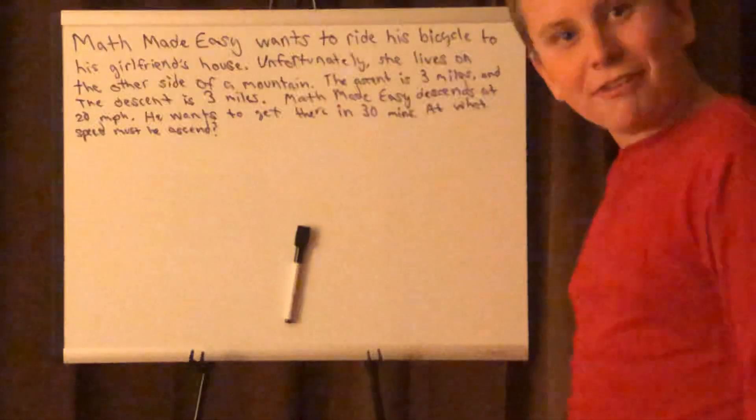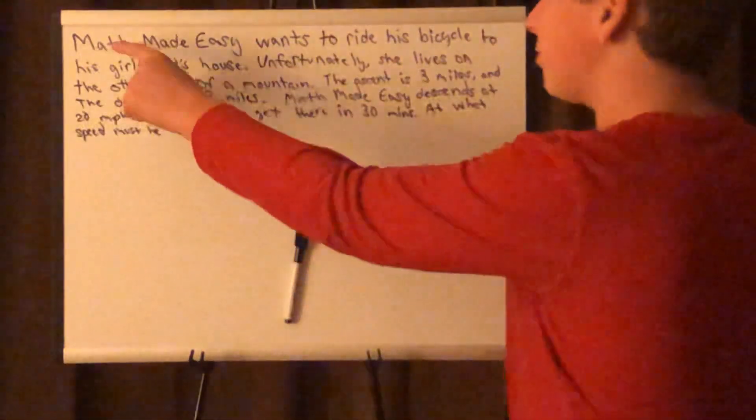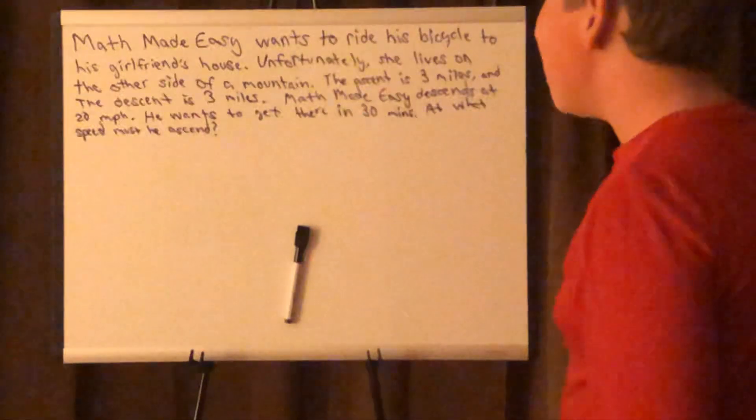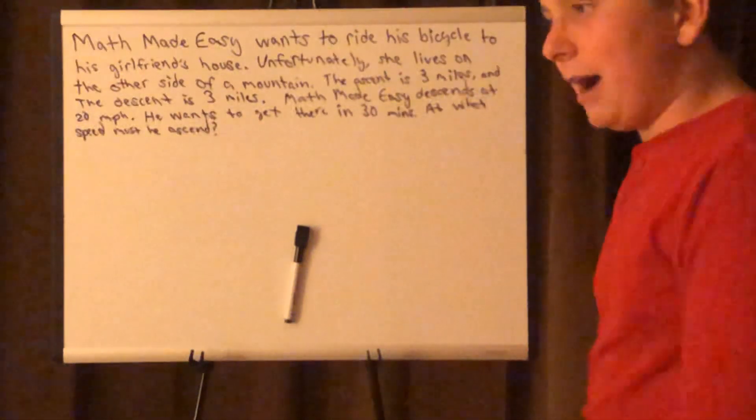I think it's a cool problem. I just made it up myself five minutes ago. I hope you like it. Math Made Easy wants to ride his bicycle to his girlfriend's house. Unfortunately, she lives on the other side of a mountain.